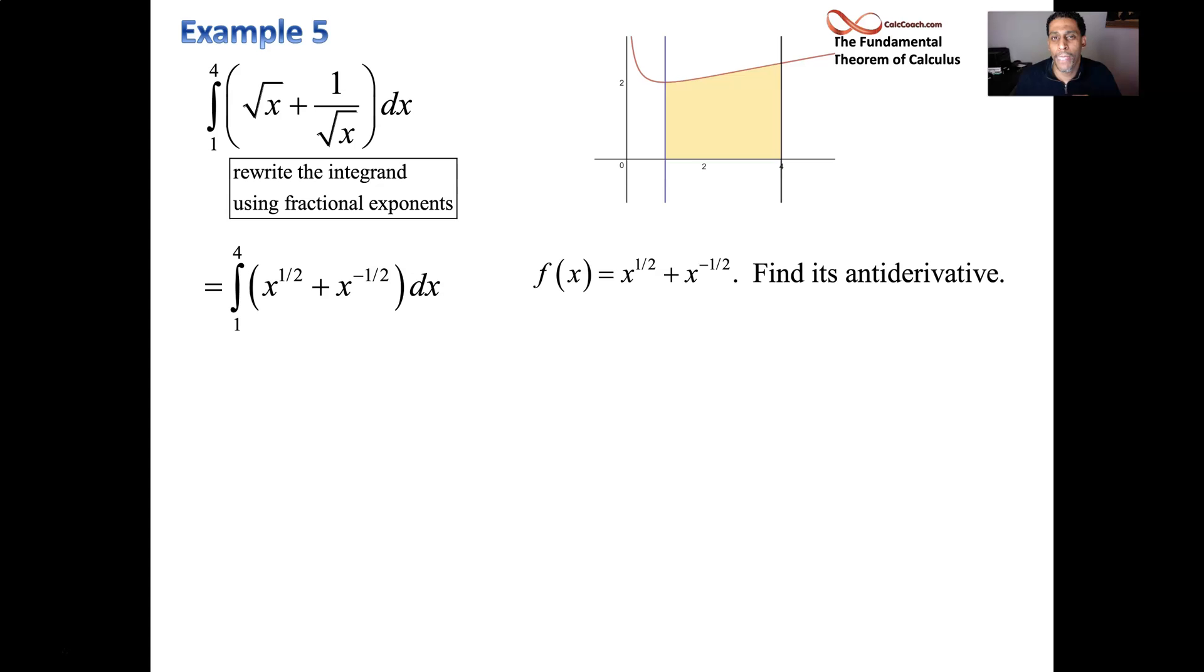Power rule in reverse to find the antiderivative. Add 1 to the exponent. So g of x would be equal to x to the 3 halves divided by 3 halves. Negative half plus 1 is half. So x to the half divided by half. We don't really divide by fractions, do we? We multiply by the reciprocal. So we're talking about 2 thirds x to the 3 halves plus 2x to the 1 half. And if you want to, you could go back and use radical exponents, you know, use the radical symbol. But what's our job to do with this? Once we get this antiderivative, plug a 4 in and plug a 1 in and subtract.